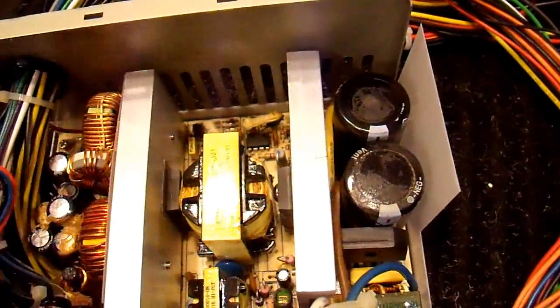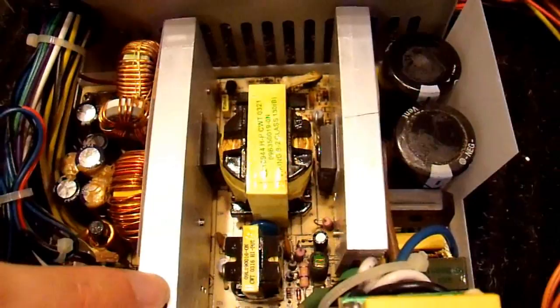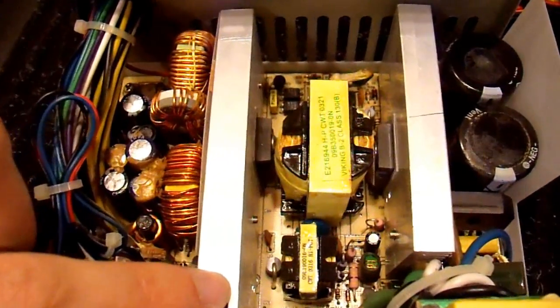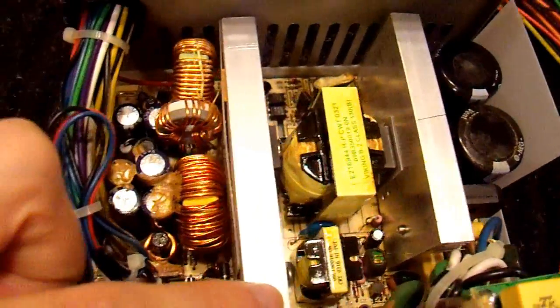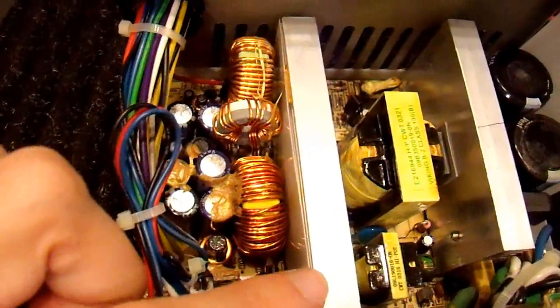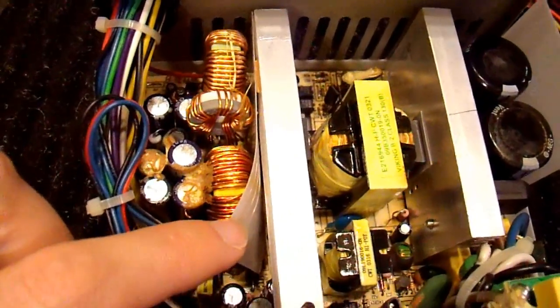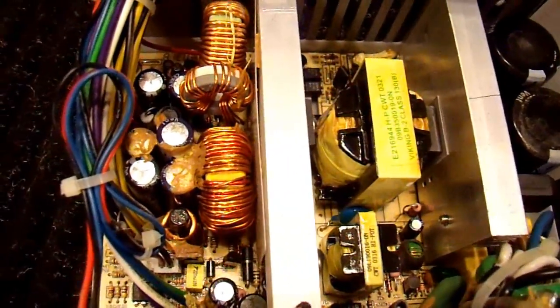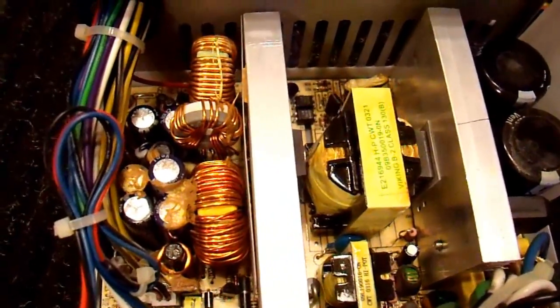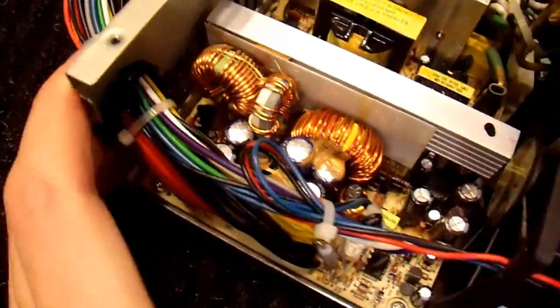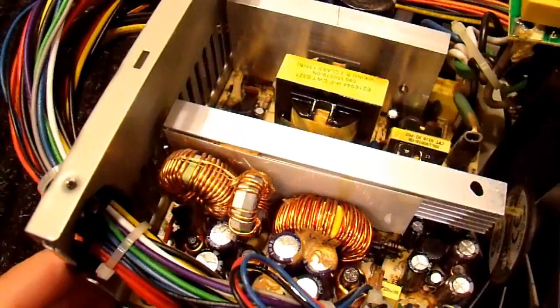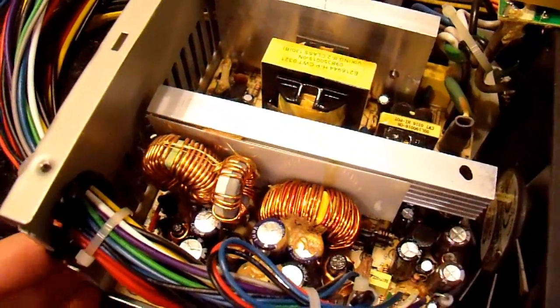And this side over here contains primarily just diodes. I'm pretty sure that this supply does passive rectification. Some of the higher efficiency ones will do active synchronous rectification using transistors, but this one most likely just uses diodes. There's multiple voltage rails on an ATX power supply, but the large ones are 12 volts, 5 volts, and 3.3 volts.